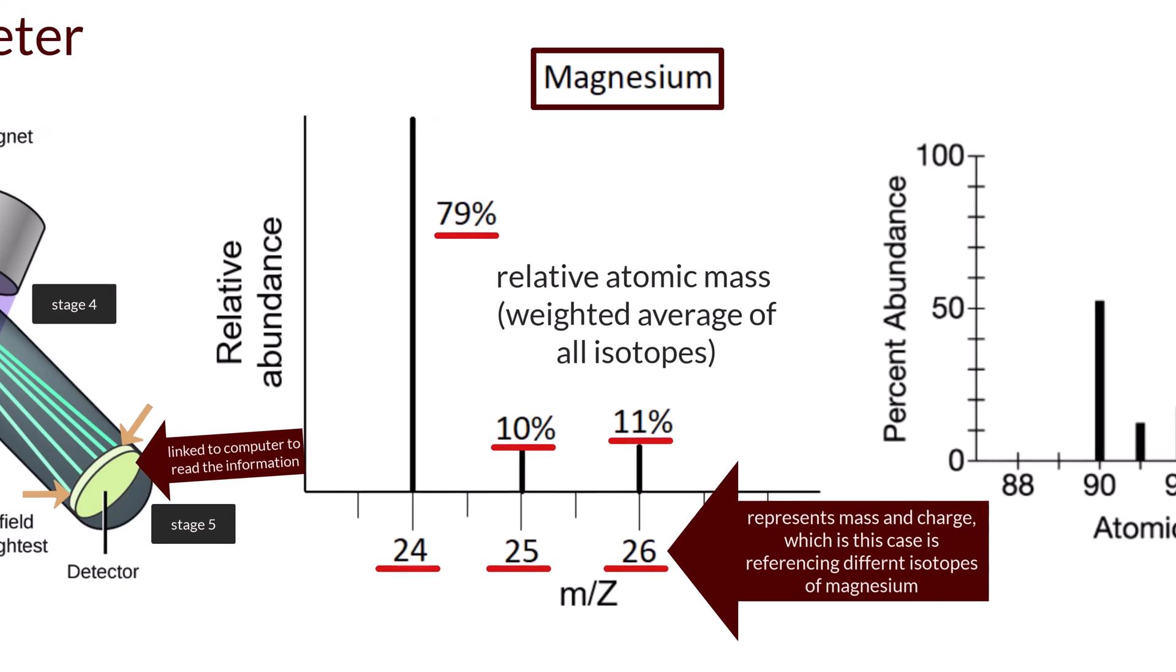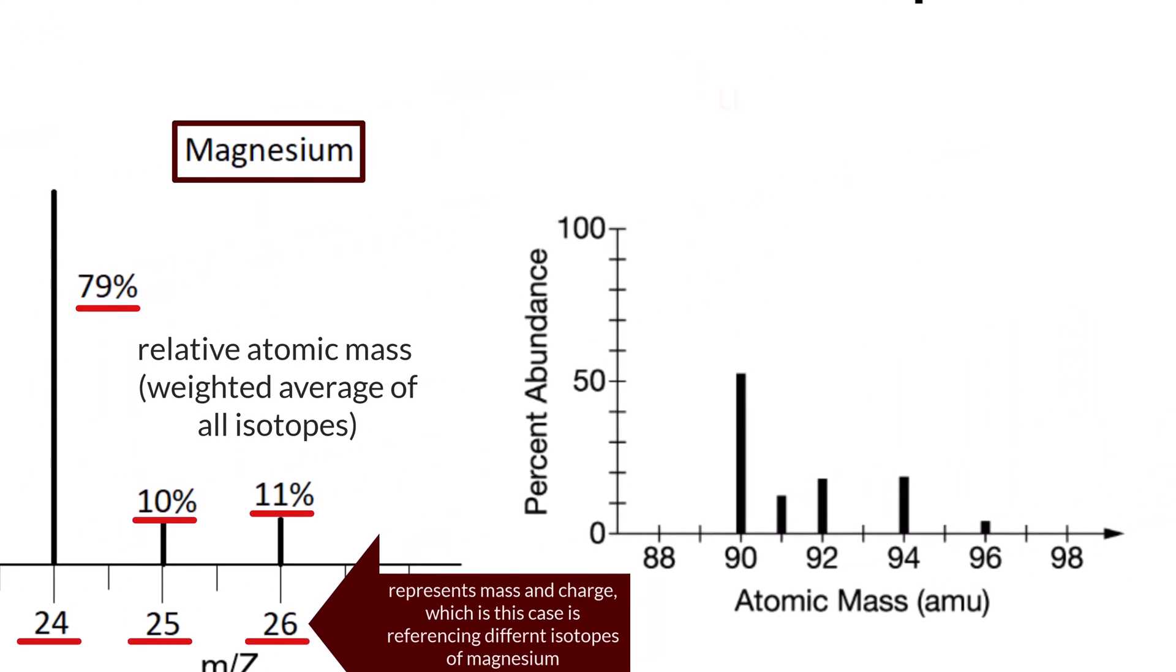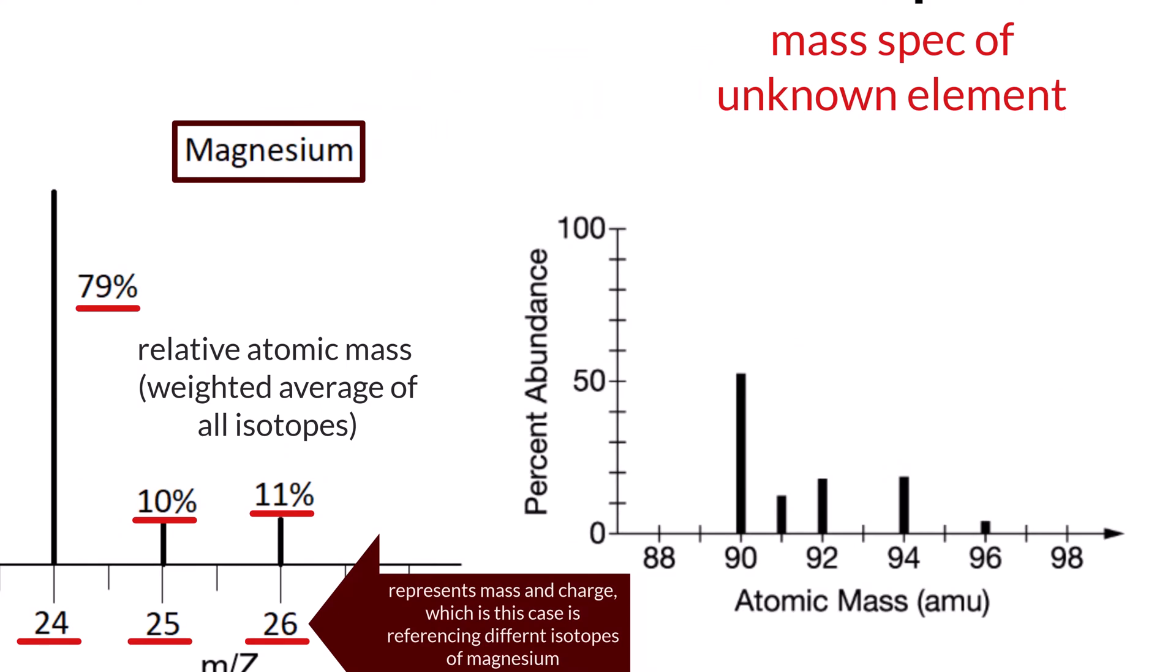In addition, some questions can give you mass spec data of an unknown element and ask you to calculate the relative atomic mass and then identify the element. So if we look at this graph, we can see that there are five different isotopes of this element at these masses, with estimated relative abundance values based on the y-axis.